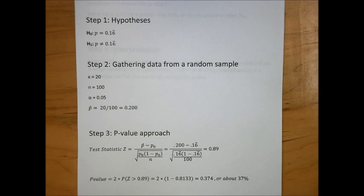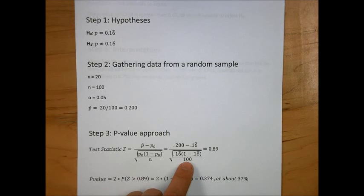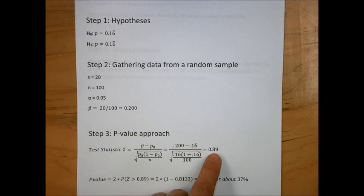In step three, we follow the p-value approach. Our test statistic, a standard normal test statistic Z, has the same equation as in the last example. When we plug in the relevant values for this problem, we should get .89. I urge you to try this on your own calculators to make sure you come to the same result.